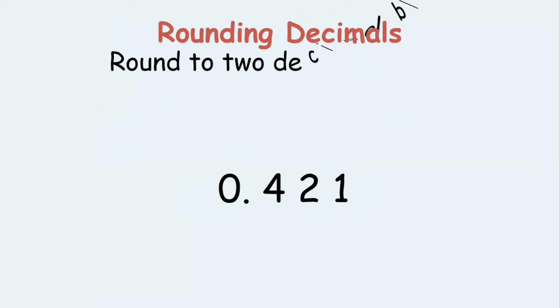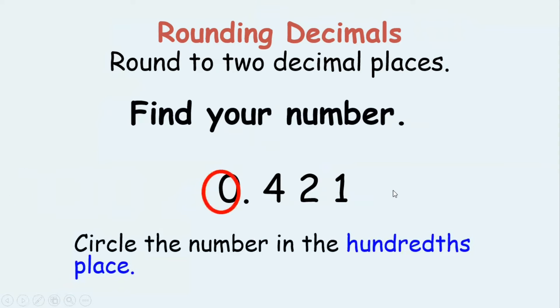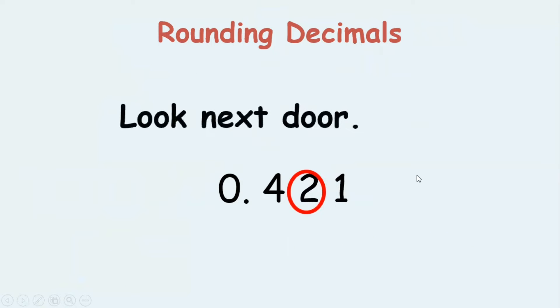The next question rounds to two decimal places. Now when we have to round up to two decimal places, which number do we have to find? Yes, the number in the hundredths place, that is two. Then we look at the next door. The next door is one. So what do we do then?